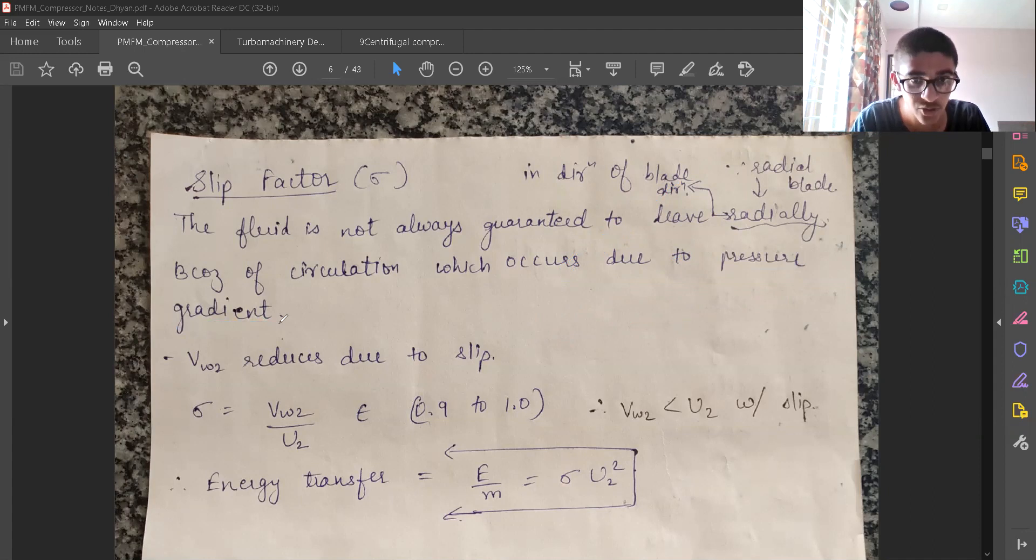This pressure gradients will lead to the fluid being circulated inside and outwards of the blade, not leading to a complete radial velocity which we have seen earlier. These are just due to pressure gradients which are happening. Due to the pressure gradients, even though in an ideal fluid, even though we have an ideal fluid, these pressure gradients are there. Viscosity is not a factor here.